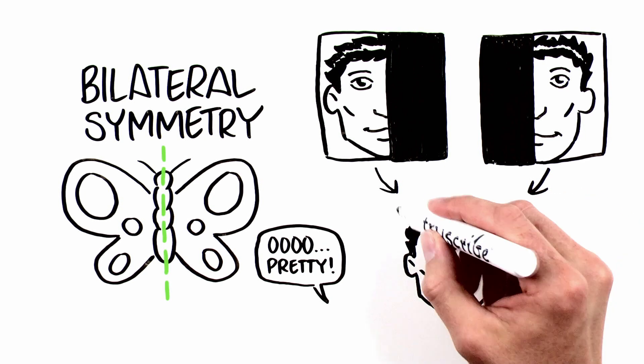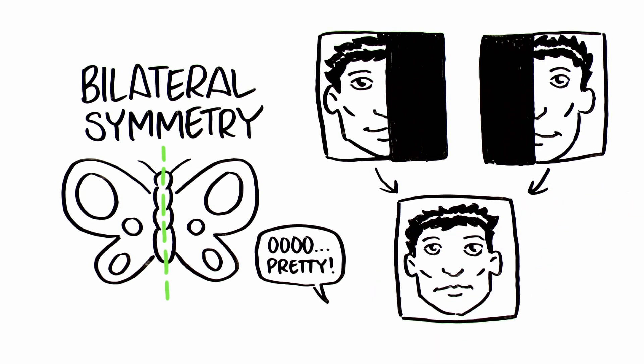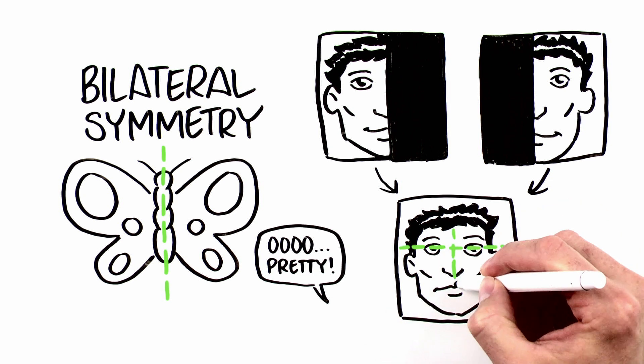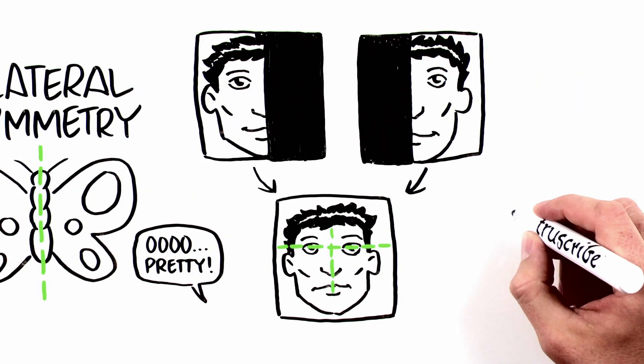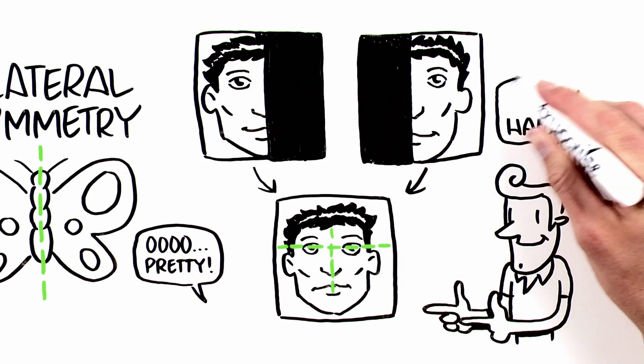Most of us have some asymmetry, difference between the right and left sides. Some people are more symmetrical and others less symmetrical. People find more symmetry more attractive.